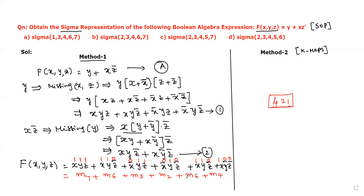Since m6 appears twice, we take it only once. The remaining minterm numbers written in ascending order are 2, 3, 4, 6, 7. Using the sigma (summation) operator, the answer is σm(2, 3, 4, 6, 7). This is our answer from Method 1.